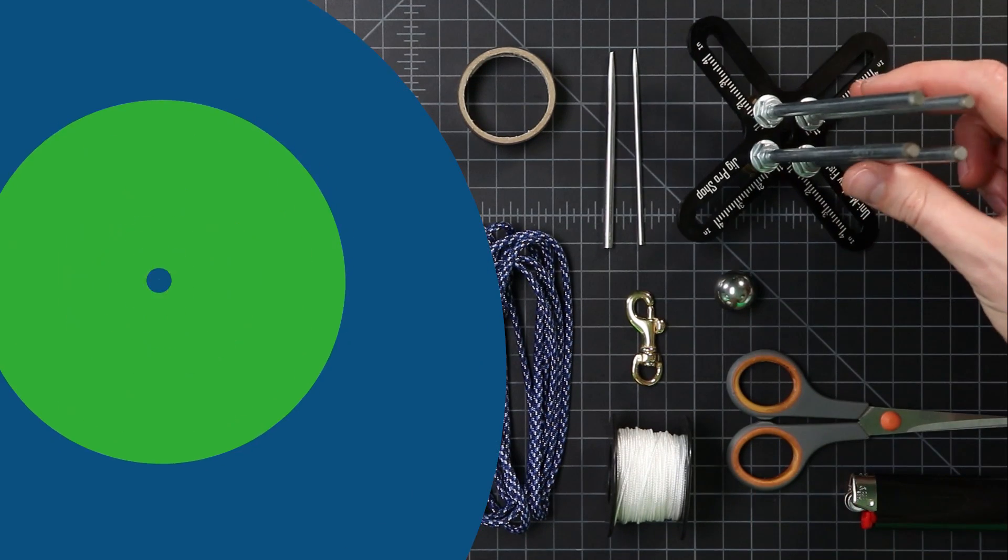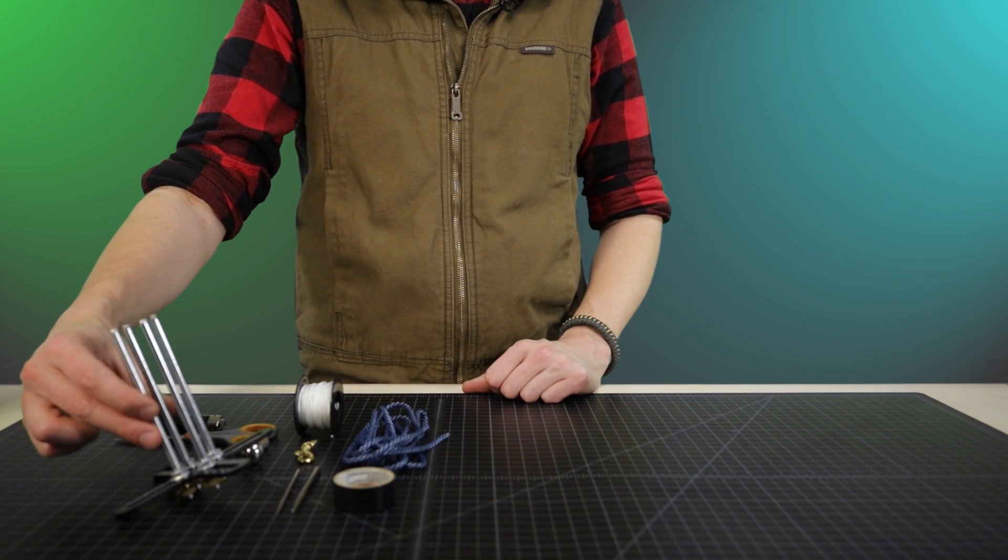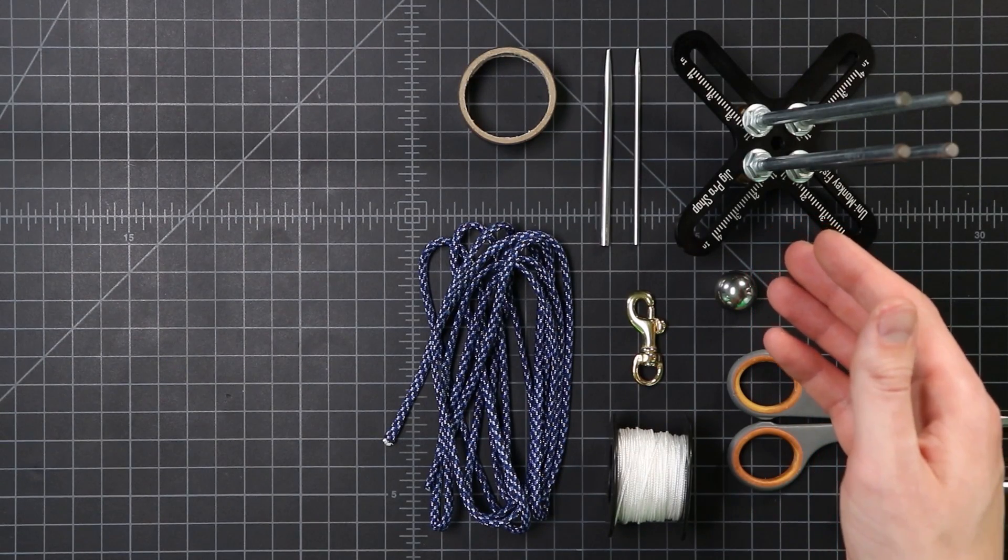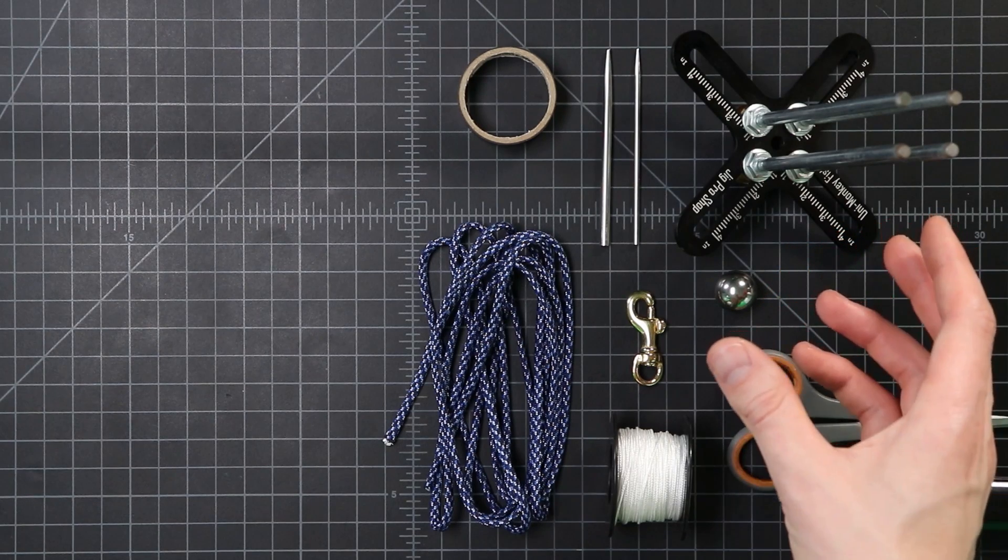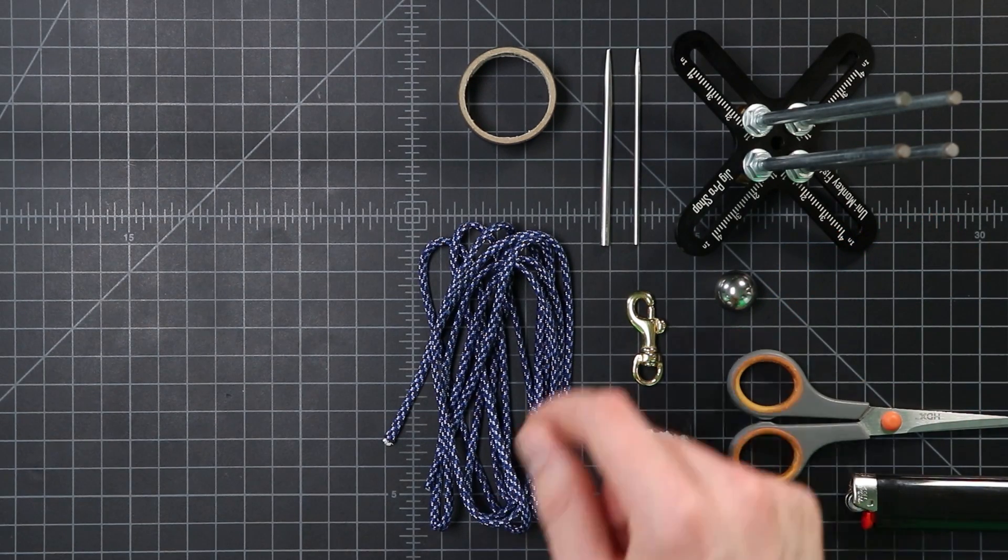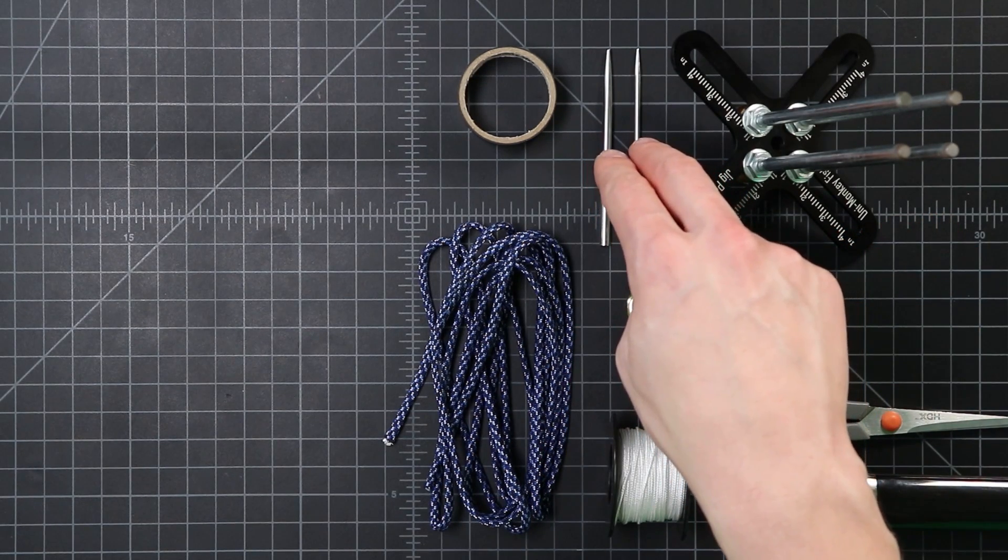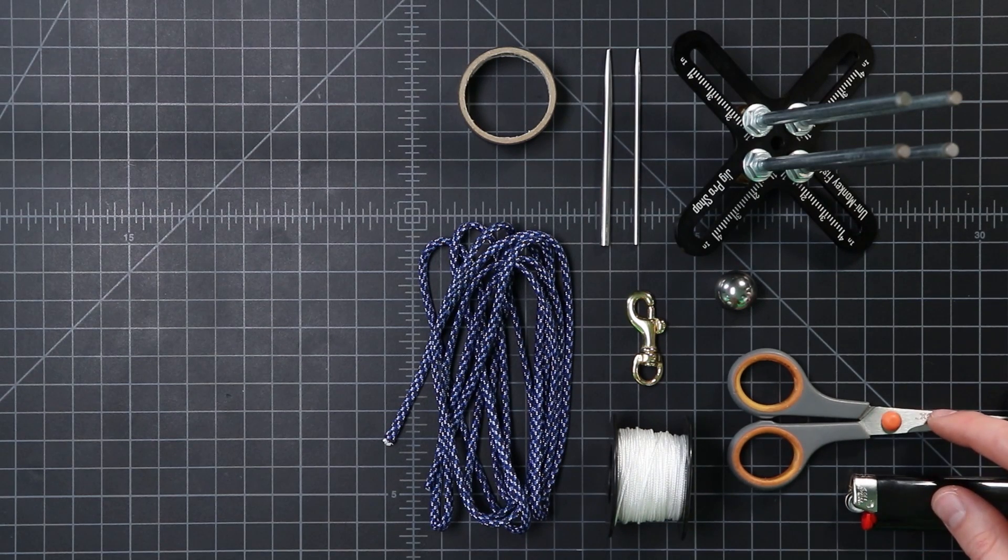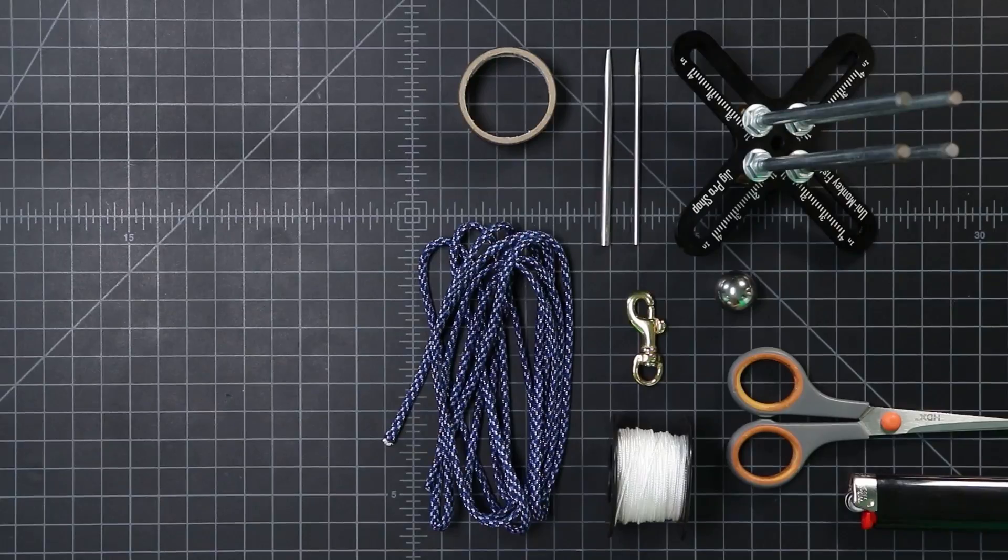For tools, I'm going to be using this monkey fist jig. It's not necessary for a keychain this size. You can also make a monkey fist on your fingers, and we'll put a link in the description to a video on how to do that. We're going to be using a couple of fids to make things easier, threading some cord through. And then of course our scissors and the lighter for the rest of our tools. Let's dive right in.